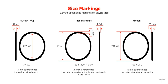The standard widths of straight-side rims are 18, 20, 22, 24, 27, and 30.5 mm. The standard widths of crochet-type rims are 13C, 15C, 16C, 17C, 19C, 21C, 23C, and 25C. The standard widths of hooked bead rims are 20, 25, and 27 mm.